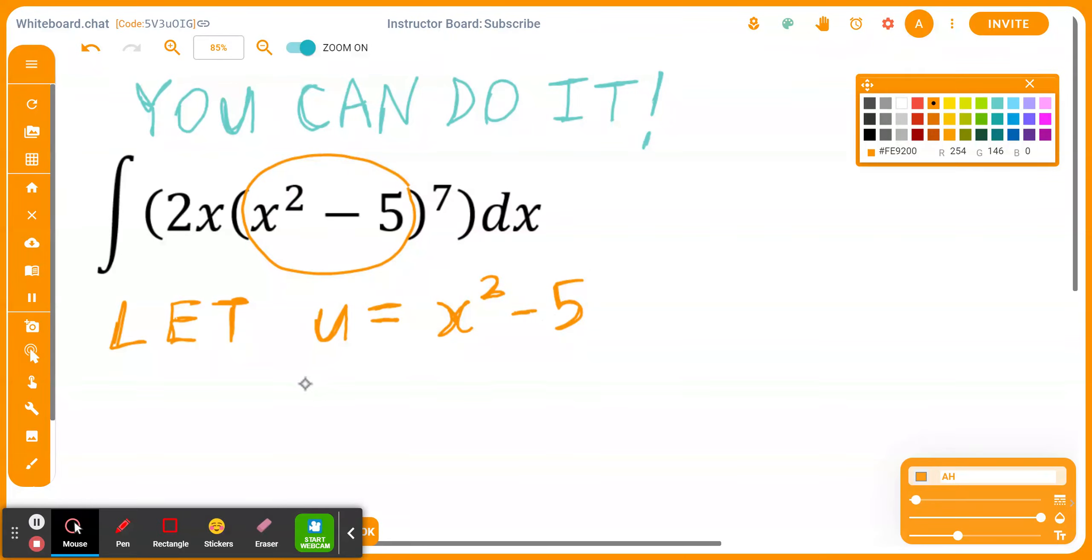So again, if you think about this, du by dx, which means you're finding the derivative of u with respect to x, equals 2 times x.